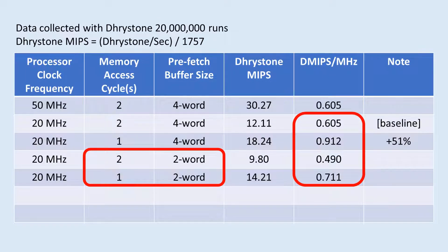I'm getting a pretty big degradation on Dhrystone numbers when I reduce the prefetch buffer length to 2. This number could change from program to program, as the optimal prefetch buffer length could vary. But the overall idea is we want to make the memory access fast, and we want to somehow buffer instruction and memory load and store streams efficiently so they don't get in each other's way and slow down program execution.